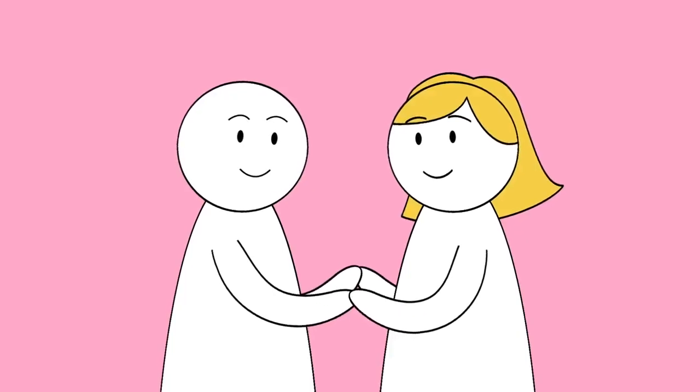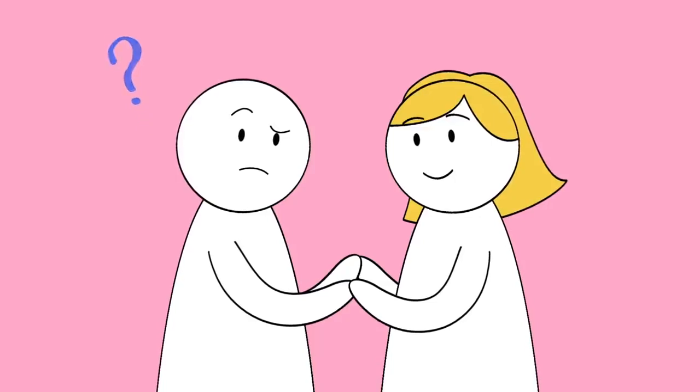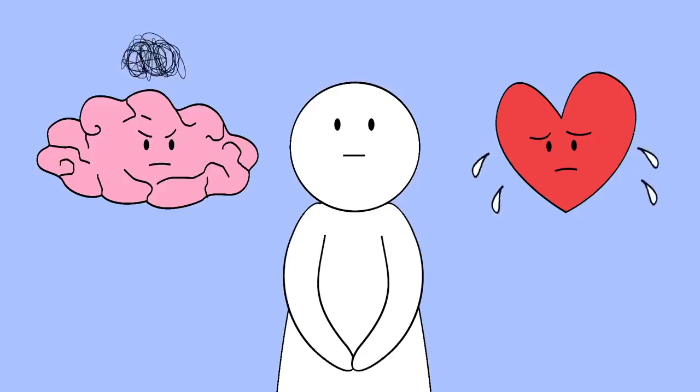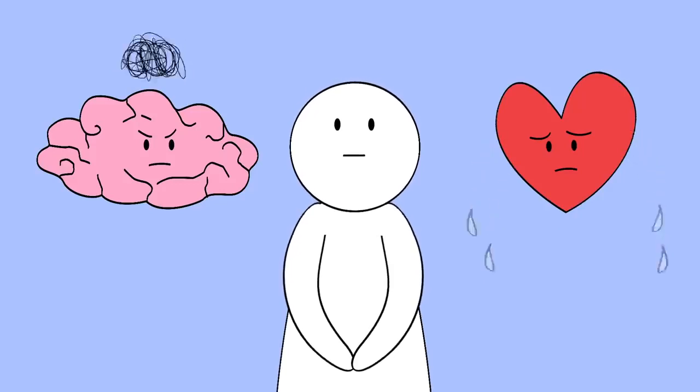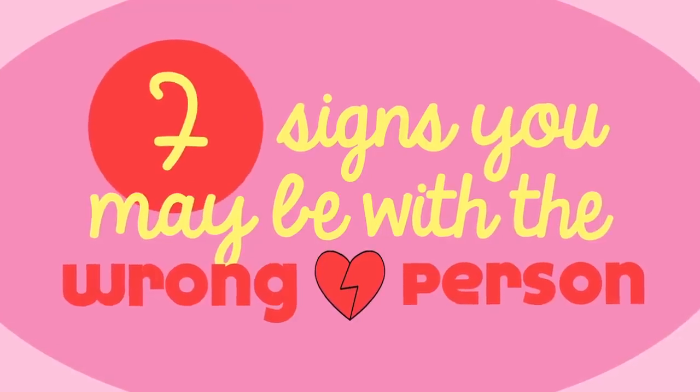All couples and potential couples have their doubts from time to time. It's only natural to ask ourselves whether we're with the right person. So are you needlessly worrying or is there really something wrong with the relationship? Here are seven signs you may be with the wrong person.